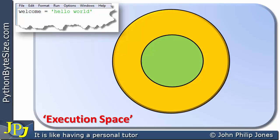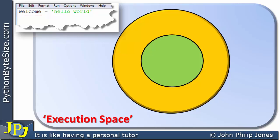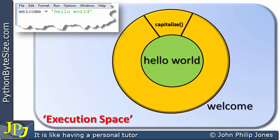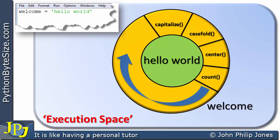Why an instance of the class string? Because we're assigning the string hello world to the variable welcome. So at the centre of this object we will have hello world. This particular object will have the identifier welcome. Surrounding the core we're going to have methods — capitalise, casefold, centre, count — and there'll be many more methods around the outside of the core. Remember, this is just a schematic diagram to help us gain a feel for what an object actually is.